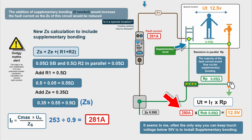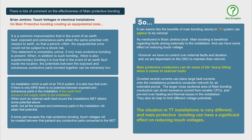With supplementary protective bonding, the exposed and extraneous conductive parts are joined together and their potentials are almost equal, bringing touch voltage down to just 12.5 volts. RCDs have largely taken over from supplementary protective bonding, but the benefit is clear. This analysis comes from the book 'Touch Voltages in Electrical Installations' by Brian Jenkins. It notes that the benefits of main protective bonding can appear minimal in some circumstances but are more beneficial when faults arise external to the installation — such as with diverted neutral currents. A follow-up video will cover main protective bonding in TT installations, where it can have a significant effect on reducing touch voltages.